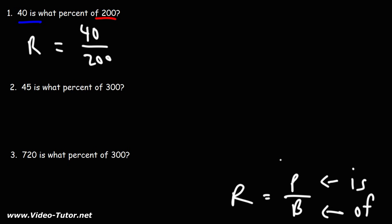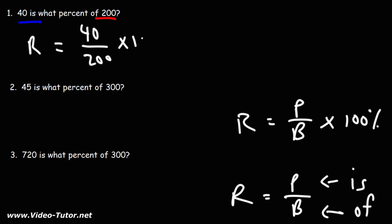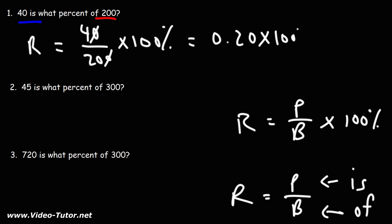This will give us the answer as a decimal, but we want to multiply by 100 to get the answer as a percent, so I'm going to add times 100 percent. 40 divided by 200 — you can cancel zeros — this is 4 over 20, which reduces to 1 over 5, which is 0.20. 0.20 times 100 percent is 20 percent. You could also use a calculator to get the same answer.